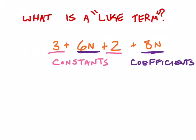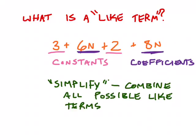Now in math, what we like to do is make things simpler when we can, and one of the ways we can do that is by combining like terms. And constants are like terms with other constants, and coefficients can be like terms with other coefficients. So if I want to simplify or combine all like terms that are possible, what I can do is combine in this case my constants with my constants and my coefficients with my coefficients.